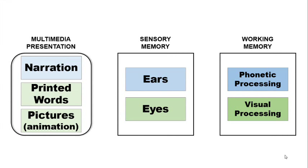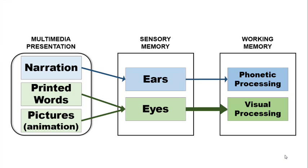I will show you the diagram one more time without on-screen text. Here's the human cognitive system. The animation enters the learner's cognitive system through the eyes and is processed in the visual channel. Meanwhile, the narration enters through the ears and is processed in the auditory channel. However, on-screen text also enters through the eyes and must be processed in the visual channel, meaning the limited cognitive resource in the visual channel must be shared. As a result, learners may experience cognitive overload in the visual channel.